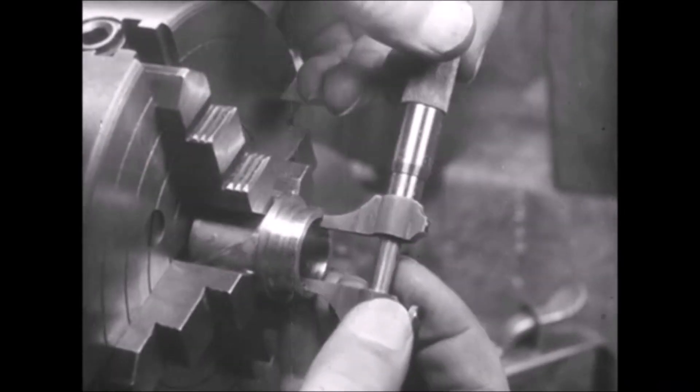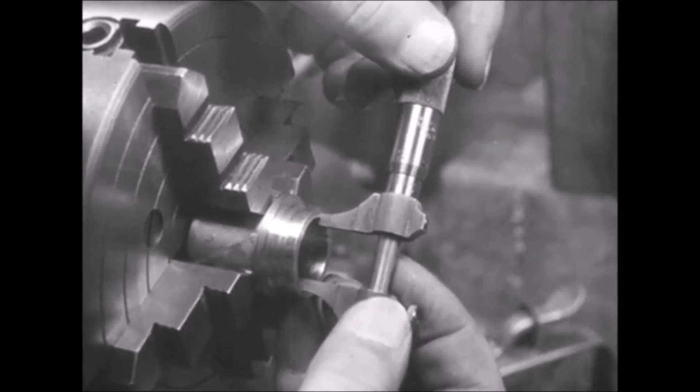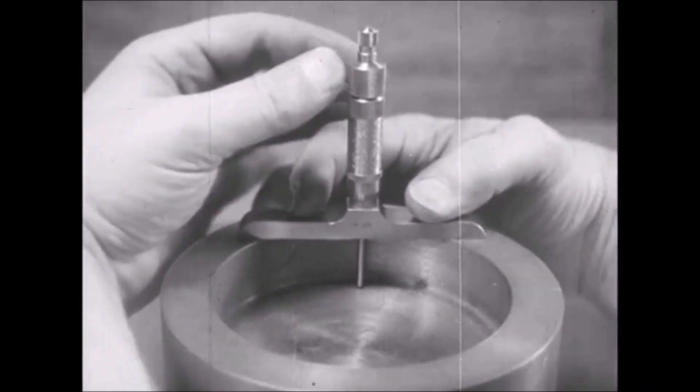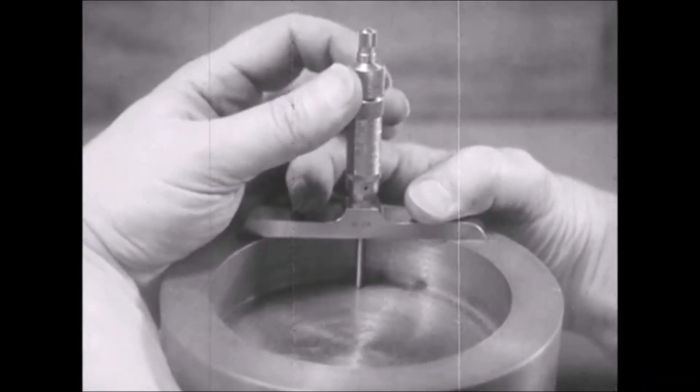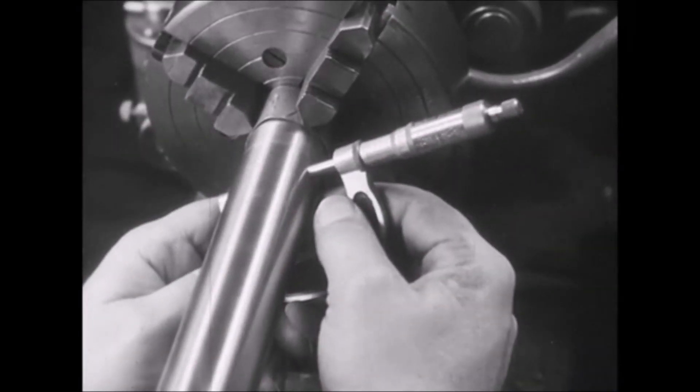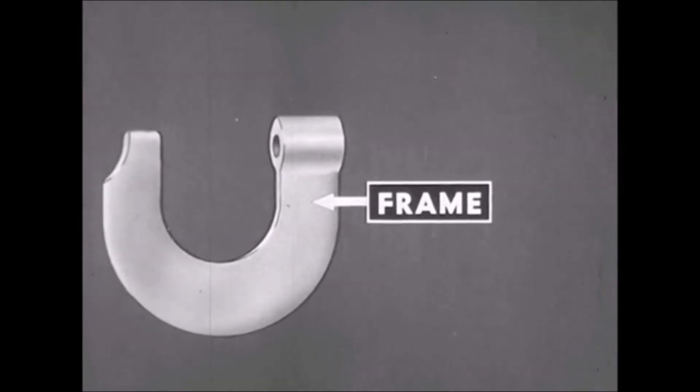Different types of micrometers are used to measure inside widths or diameters, outside lengths or thicknesses, and the depth of holes or cuts, but the principle used by each is the same. The micrometer caliper used in measuring thickness or outside length has a sturdy frame on which is mounted a hardened steel anvil.